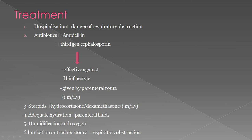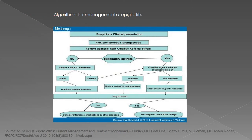Treatment requires hospitalization given the danger of respiratory obstruction. Antibiotics — ampicillin or third-generation cephalosporins effective against H. influenzae — are started parenterally by intramuscular or intravenous route. Steroids such as hydrocortisone and dexamethasone can be given IM or IV. Adequate hydration, humidification, and oxygenation are provided. Intubation or tracheostomy may be required if respiratory obstruction occurs.